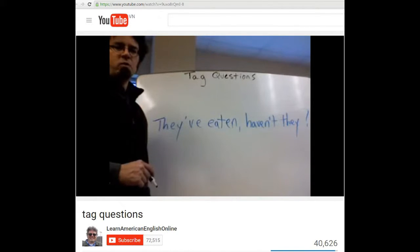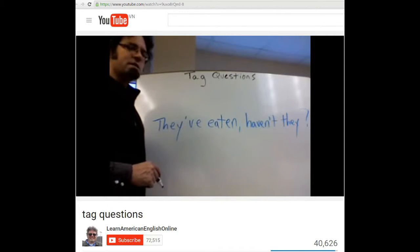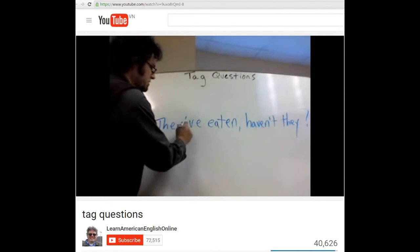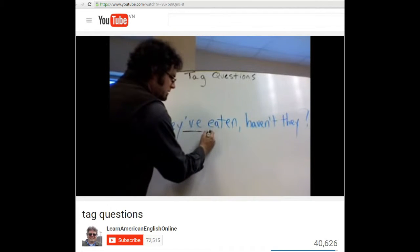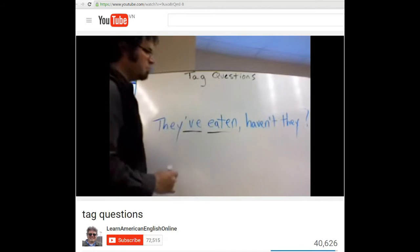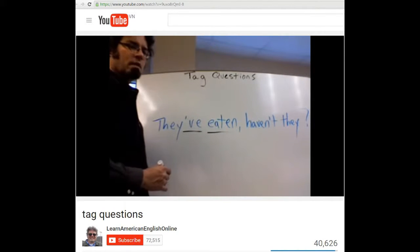It's very important to pay attention to the tense when you make a tag question. In this example, they've eaten, haven't they? Here's a contraction. They've, the main verb eat, in the form of a past participle, eaten. They've eaten, haven't they?